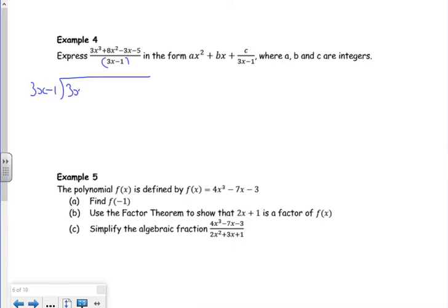So it's 3x cubed, 8x squared, minus 3x minus 5. How many times does 3x go into 3x cubed? Well, that's x squared times. x squared times by the divisor gives 3x cubed minus x squared.